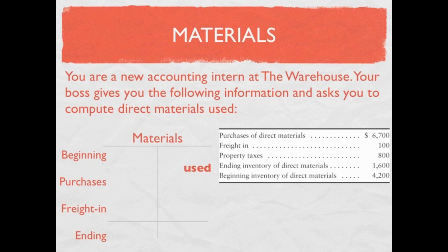Let's fill in the information we know. Beginning inventory is $4,200. Purchases of materials was $6,700. Freight in is $100. Ending inventory is $1,600. If we take all of our debits, add them up, and then subtract our ending inventory, we will get materials used of $9,400.